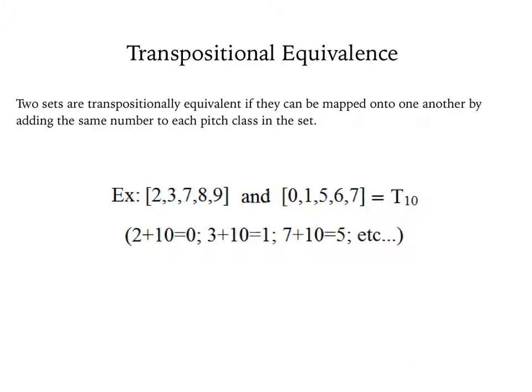For example, we have 2, 3, 7, 8, 9 and 0, 1, 5, 6, 7. We know they are transpositionally equivalent by adding 10 to 2 to get 0, 10 to 3 to get 1, and so on.